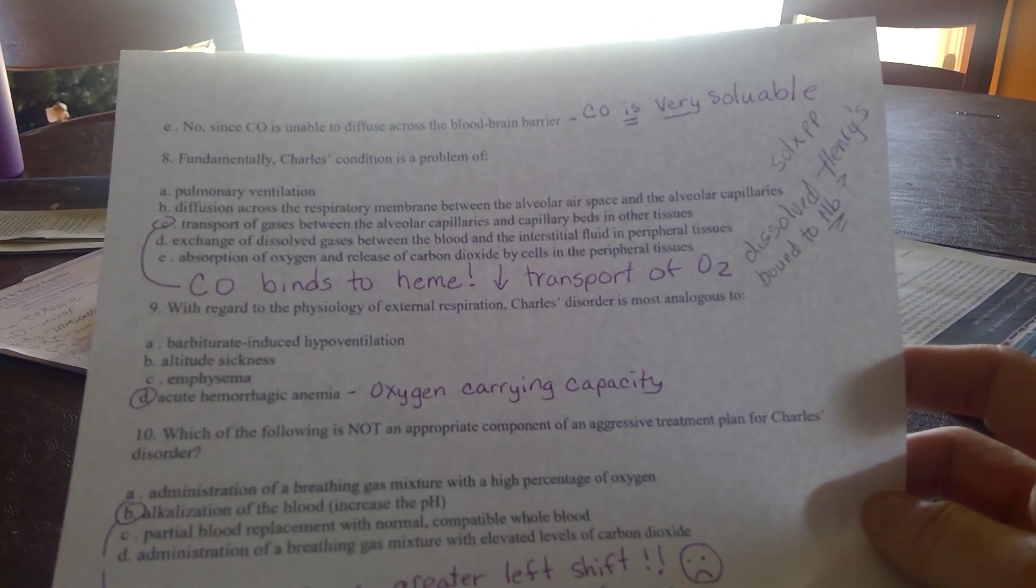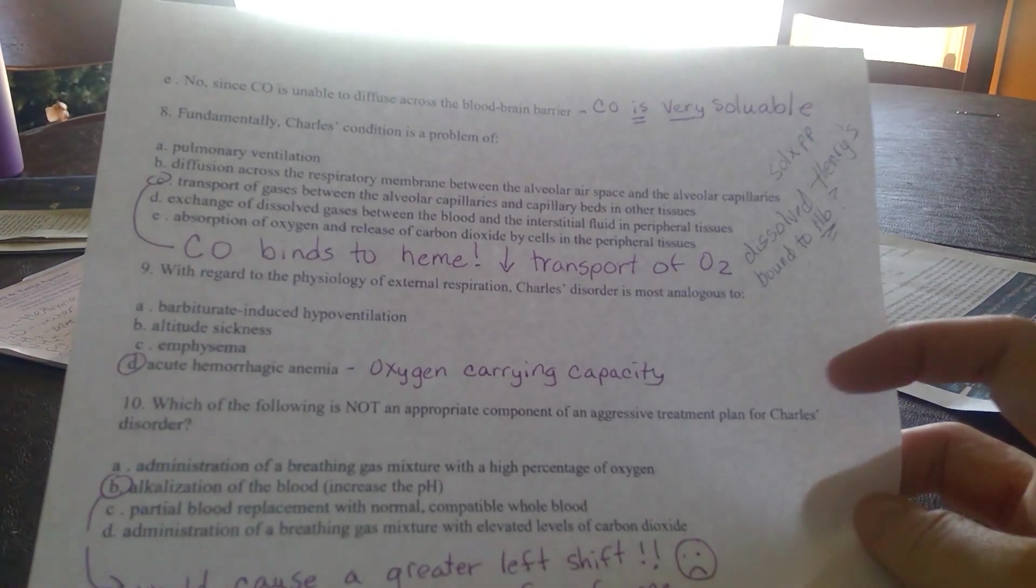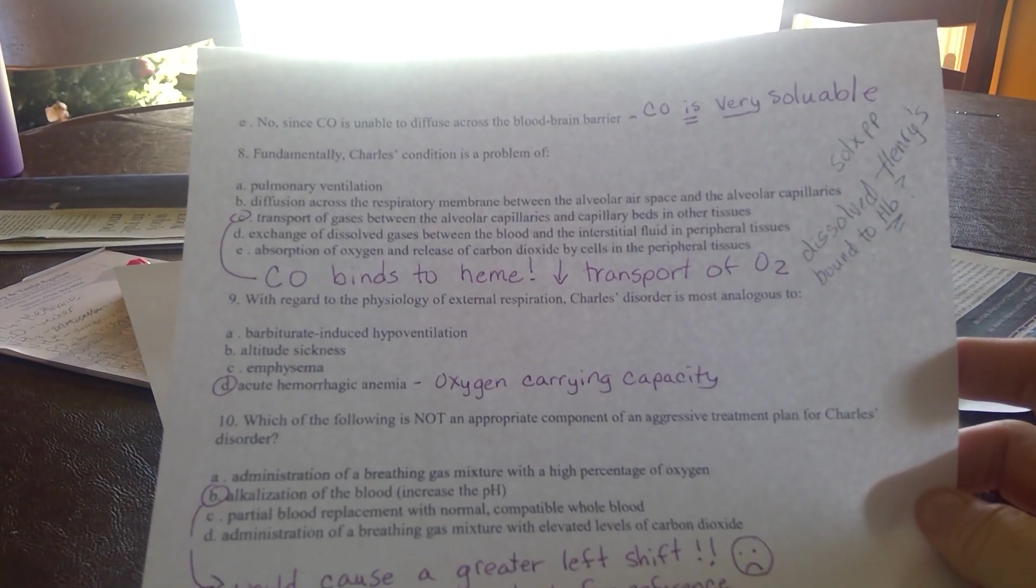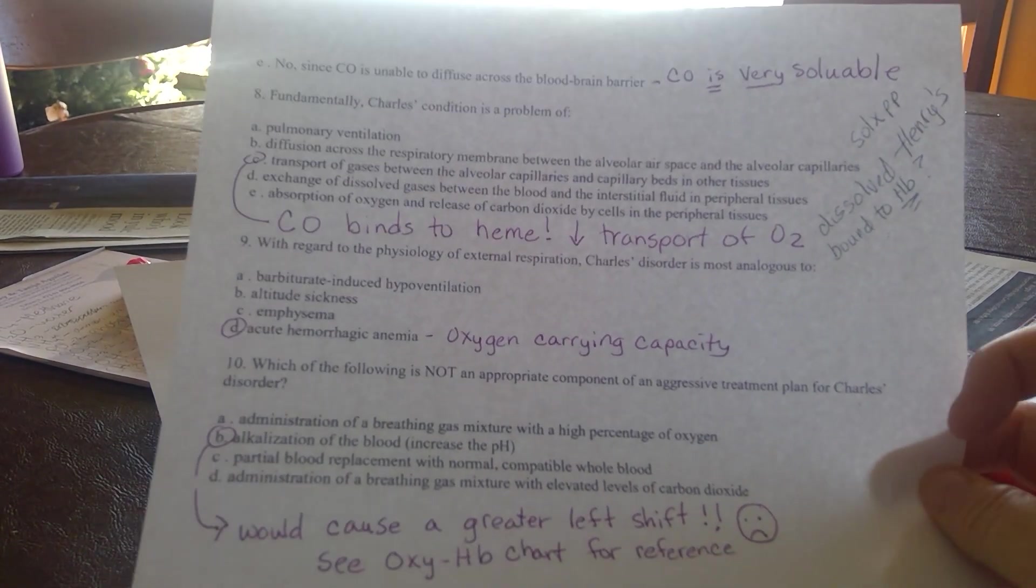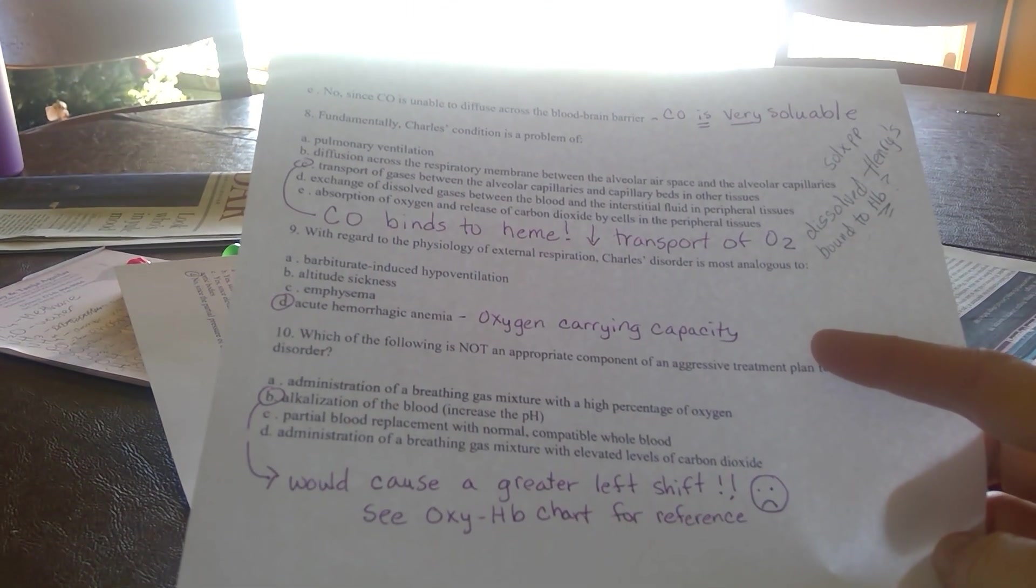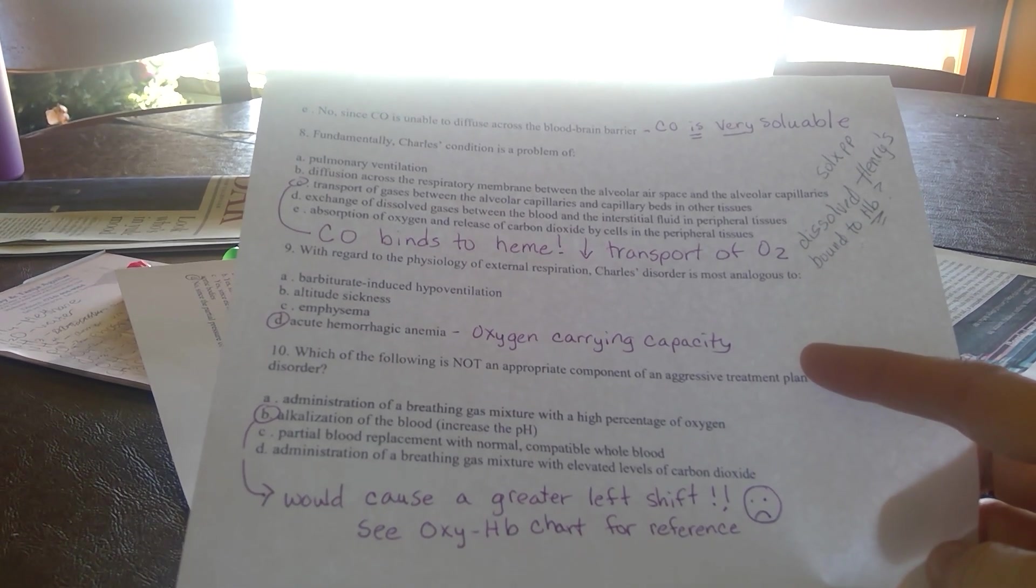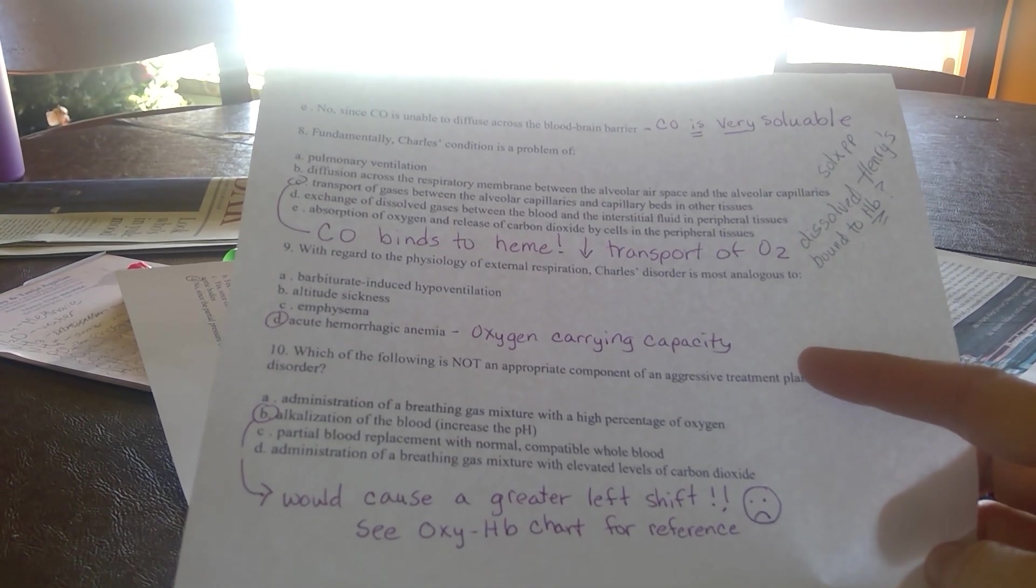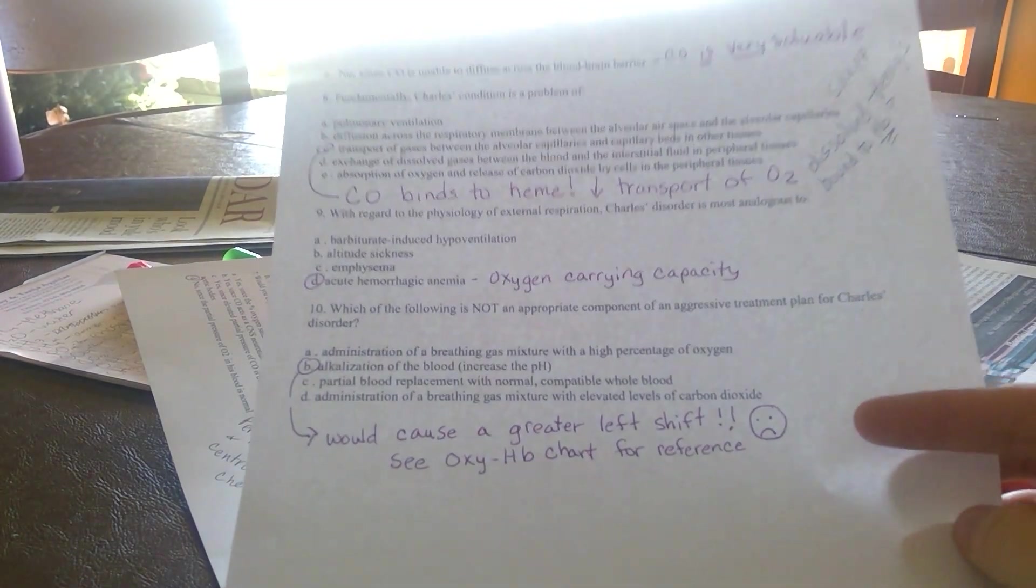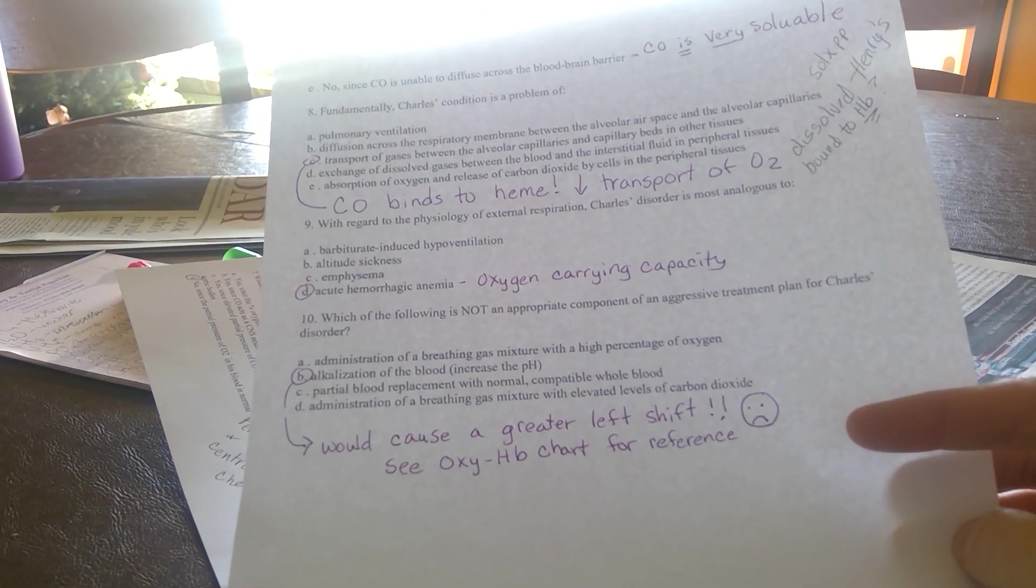The primary way we transport oxygen is bound to our heme. If some of our hemoglobin, specifically our heme, is bound to carbon monoxide, this fundamentally means we have a decrease in transport of oxygen. If we consider that the primary way we transport oxygen is bound to our heme, then Charles's disorder is analogous to a decreased oxygen-carrying capacity. That's the definition of anemia, a decreased oxygen-carrying capacity.